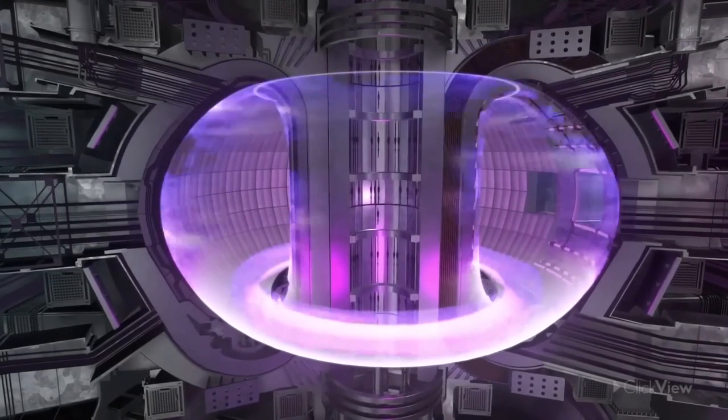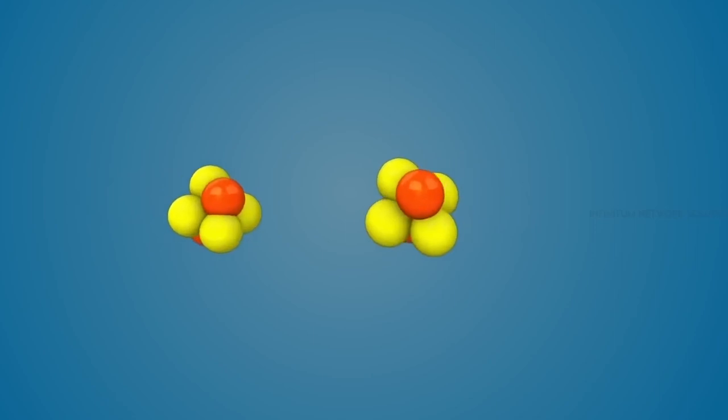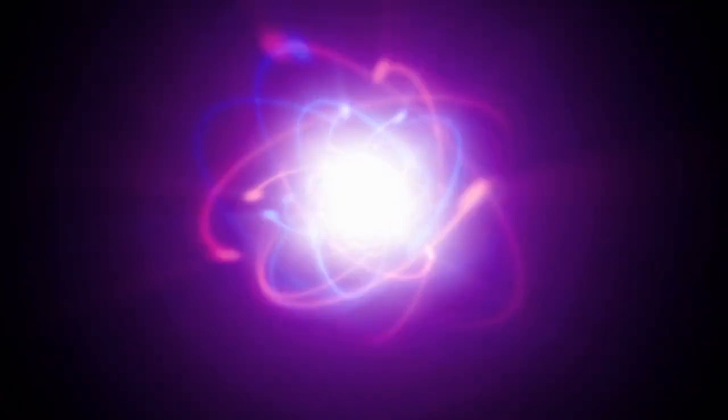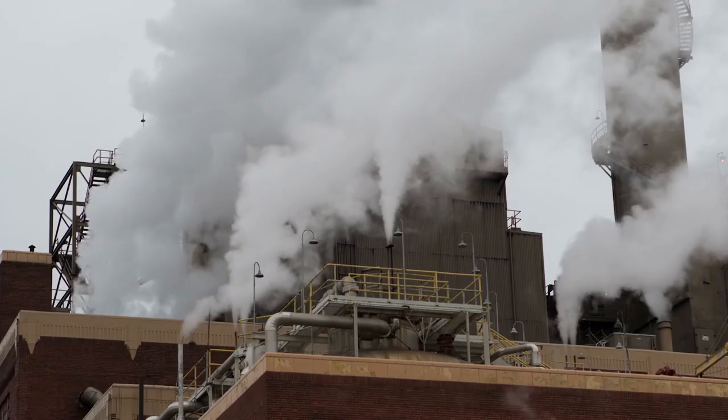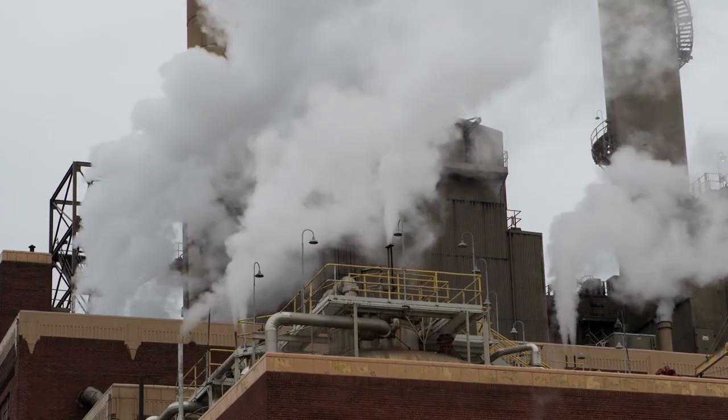Inside the reactor, hydrogen isotopes are squashed together, forming helium atoms and releasing energy-filled subatomic particles called neutrons. The main fuels needed for nuclear fusion are tritium and deuterium from hydrogen in water, which is renewable and does not emit greenhouse gases in the process.